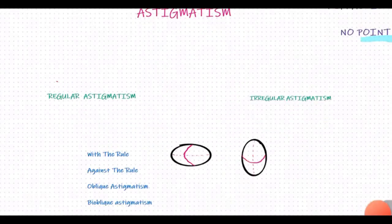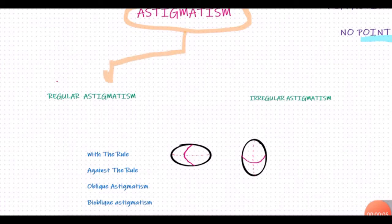Broadly, astigmatism can be divided into two types: regular astigmatism and irregular astigmatism.